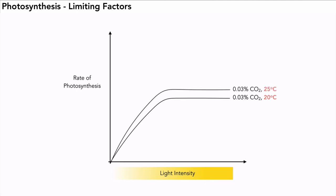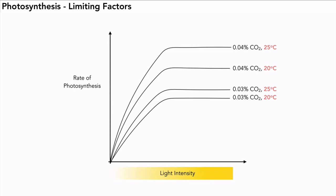What would happen if we raised the temperature to 25 degrees? The overall maximum rate of photosynthesis increases. We can also change the carbon dioxide concentration at the same time — if we use 0.04% CO2 at 20 degrees, the rate increases further. Combining higher CO2 at 0.04% with 25 degrees gives an even higher maximum rate of photosynthesis than any of the other conditions.